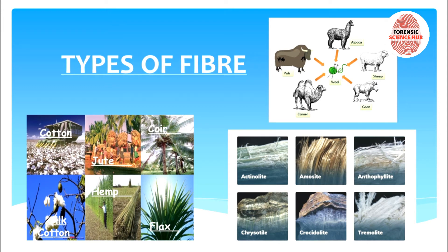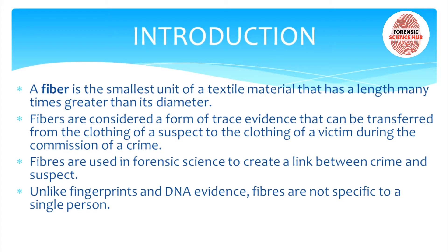Welcome back to my channel. In today's video I'm going to talk about types of fiber or classification of fiber. First, let's discuss what a fiber is. A fiber is the smallest unit of textile materials — the smallest visible unit of any textile product like a cloth, rugs, mats, etc. Its length is many more times greater than its diameter; it is very fine, hence the diameter is very much smaller compared to the length.